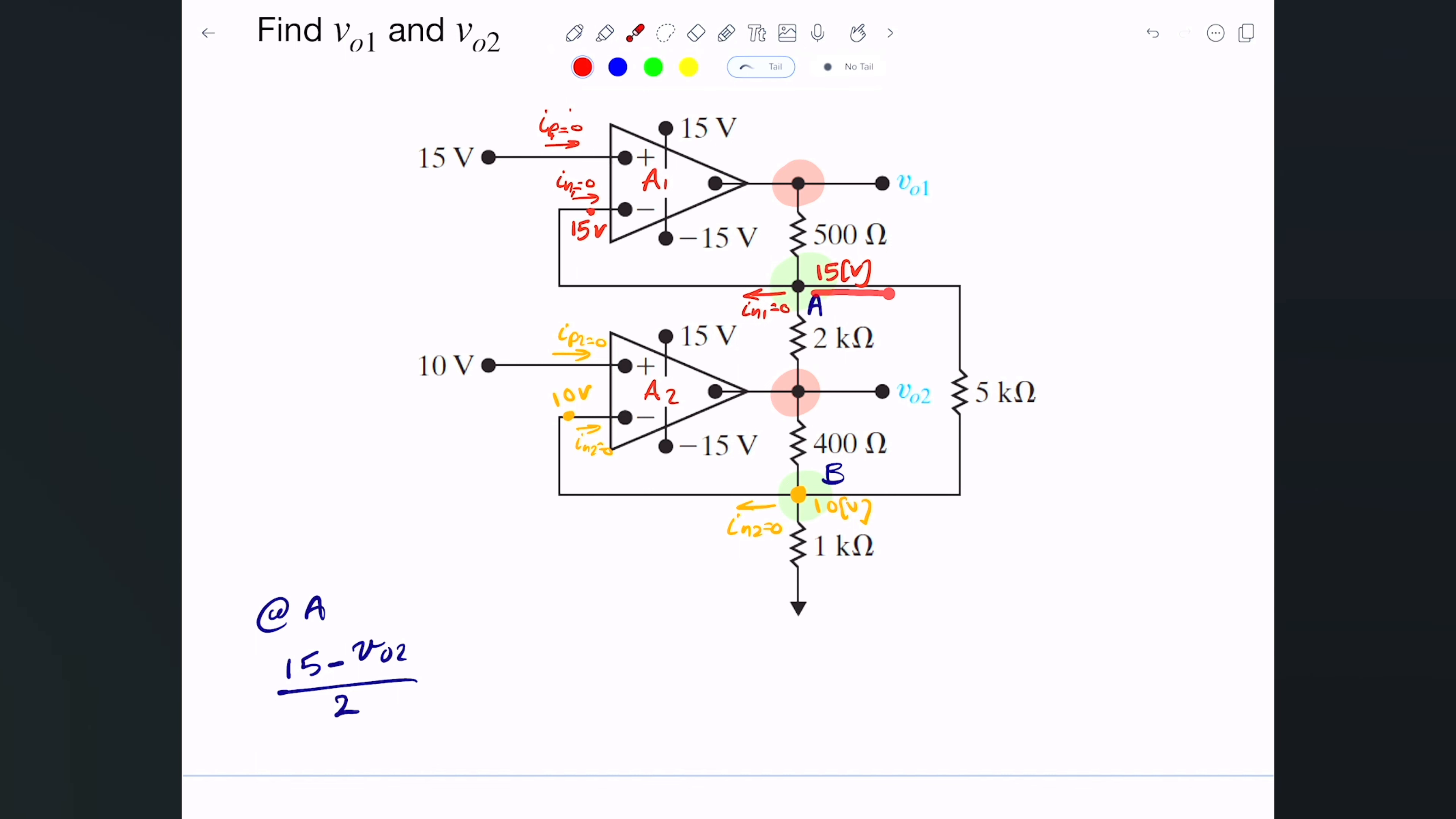Now let's take a look at the current going this way. The current going here is actually 15 minus 10. I kind of know what it is. It's actually 15 minus 10 volts divided by the 5 kilo ohm. So this is 10 minus 15 divided by the 5 kilo ohm.